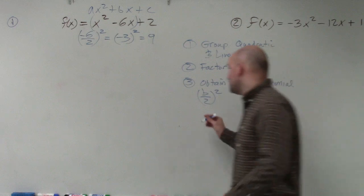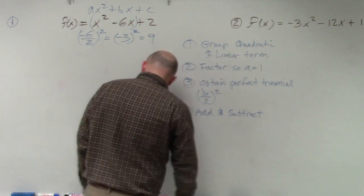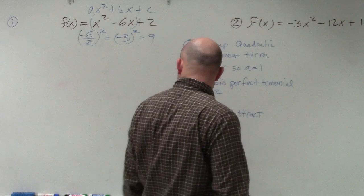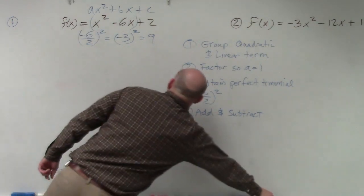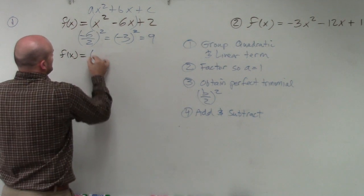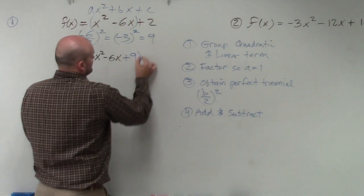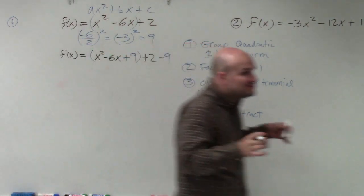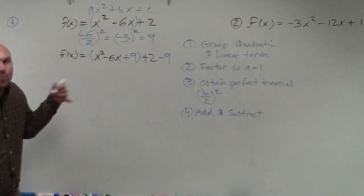Step number four, add and subtract. This one kind of gets some students. So we have a function, which is f of x equals parentheses x squared minus 6x. And now I'm going to add a 9. Then it's plus 2. And now they're saying to subtract a 9. Now, remember, when you're doing this, you need to add the 9 inside the parentheses. And then you need to subtract it outside the parentheses. Why are we adding and subtracting?